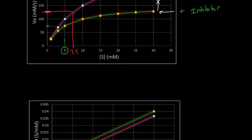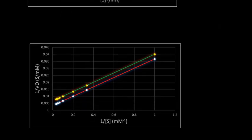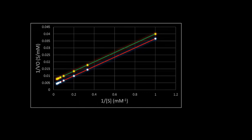The presence of this inhibitor will also influence our Lineweaver-Burk plot. Remember, our Lineweaver-Burk plot, we're plotting the inverse of our initial velocity versus the inverse of our substrate concentration.